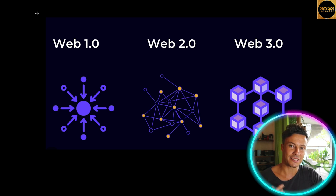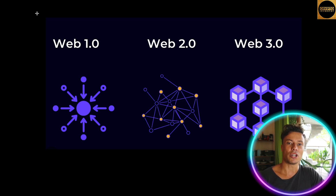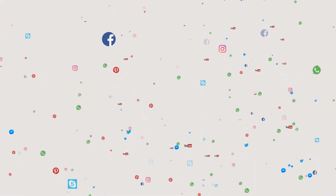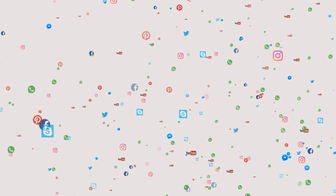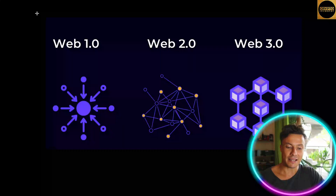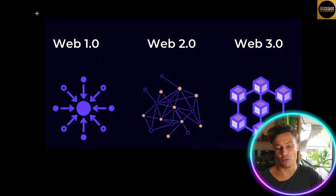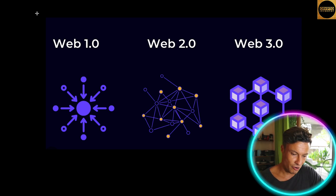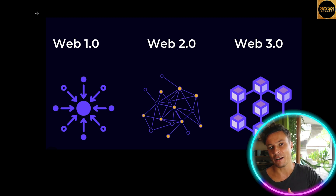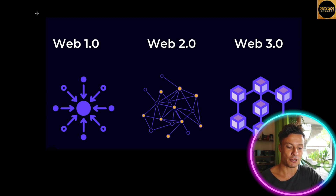Web 2.0 allowed us to start interacting with the internet. That meant that we were then able to start posting things on the internet — think Instagram, Facebook. You were also able to go and buy different things from the internet through web stores like Amazon. That has basically been what we've been living through since the early 2000s, and some of the names in the game — Amazon, Google — have grown absolutely enormous and have really benefited from the growth of Web 2.0.